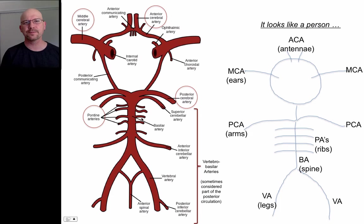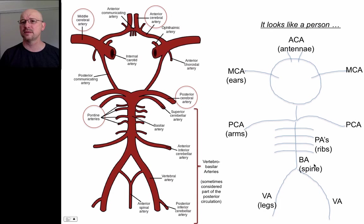How do I remember how that looks? I remember that it looks like a person. If you draw a person with some antenna and with these big ear hairs sticking out, they come down with arms, a spine with ribs, and legs. So if you want to remember how the circle of Willis and the arteries that feed into it work, you remember that you draw a little person. Draw their head — that's the circle of Willis. The anterior cerebral arteries up here are the antenna.